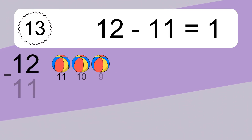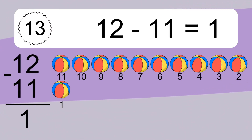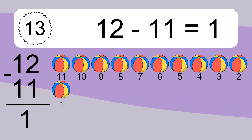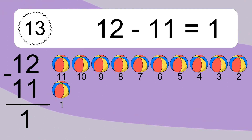12 minus 11 equals what? 12 minus 11 equals 1. Let's count it: 11, 10, 9, 8, 7, 6, 5, 4, 3, 2, 1.